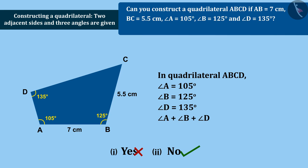Angle A plus angle B plus angle D equals 365 degrees. The sum of three angles given is 365 degrees, but we know that the sum of the four angles of a quadrilateral is 360 degrees.